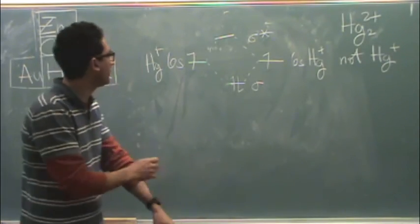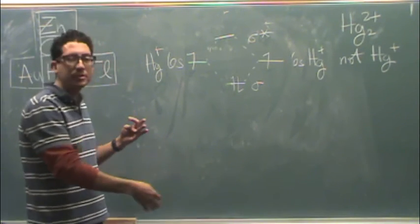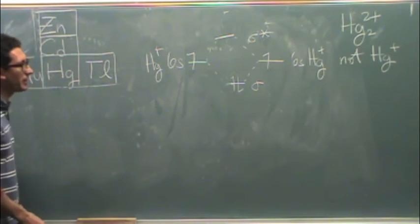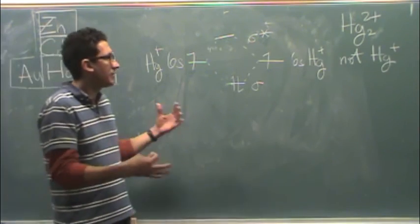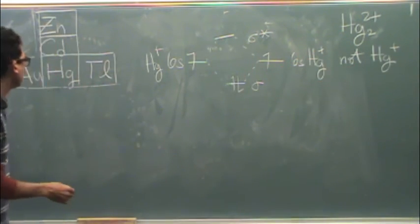So, hopefully that gives you a little bit of explanation of why mercury does this. Again, this is just an approximation, trying to put it in general chemistry language, and get a little bit of an idea about this dimer and what mercury is like in general.